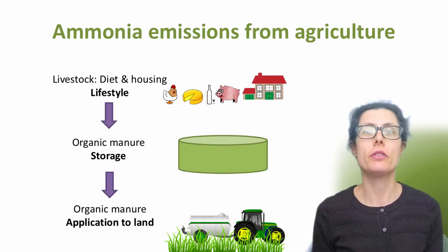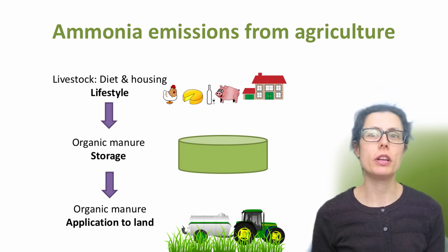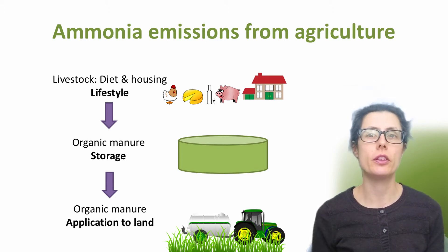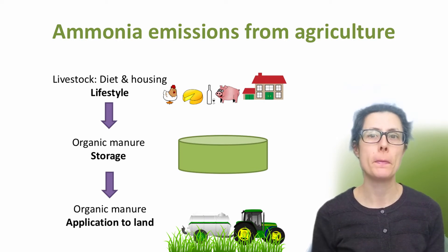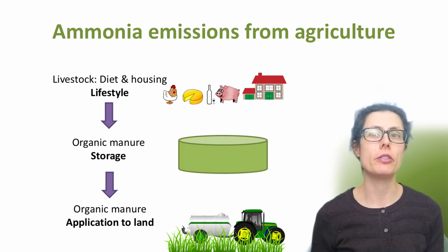So around 90% of ammonia emissions are from agriculture, including all stages of the livestock production system, which you can see on the diagram. Firstly, during livestock production itself, both housing and diet can contribute. Secondly, from stored organic manures, and at this point digestates from anaerobic digestion would also be included. And finally, during application to land. So today my focus is on ammonia emissions following application to land, and I have separate videos where I talk about the other aspects shown here.